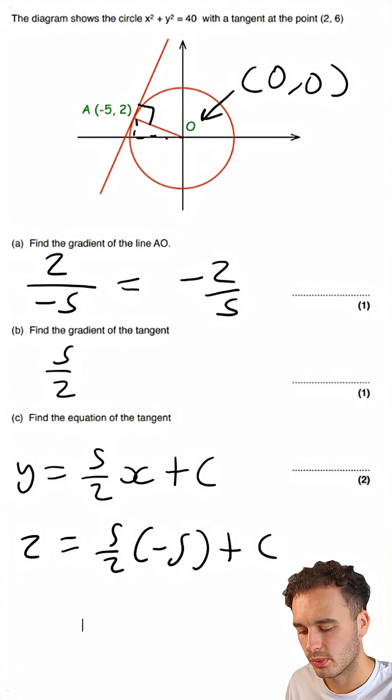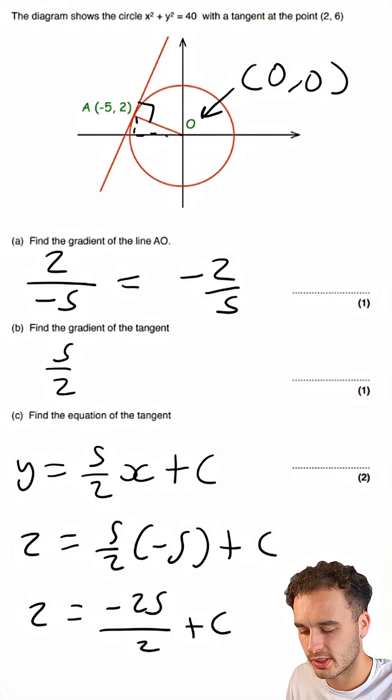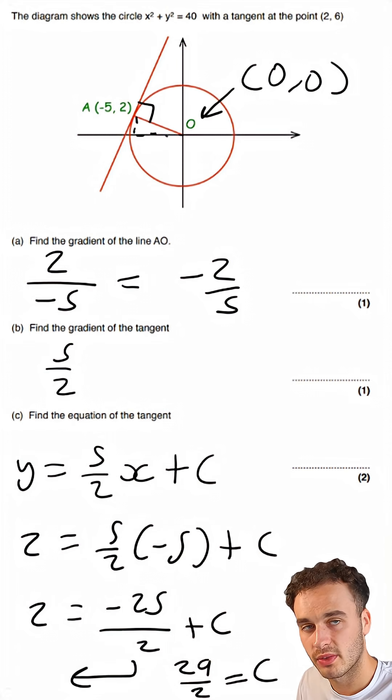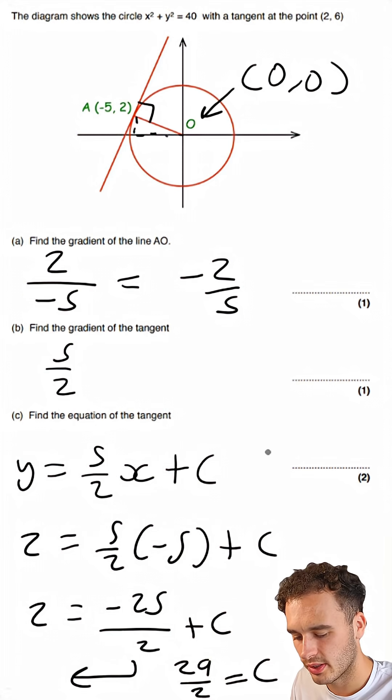So multiplying out the bracket, this will go to 2 equals minus 25 over 2 plus C. And then adding minus 25 over 2 to the left side, this now becomes 29 over 2 equals C. So the equation of our tangent is Y equals 5 over 2X plus 29 over 2.